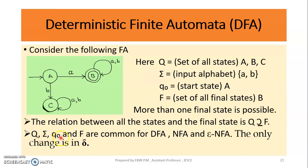So the five tuple is: Q, sigma, Q0, F, and delta. Now, Q, sigma, Q0, and F are common across DFA, NFA, and epsilon NFA. The difference between them lies in delta, the transition function. What is common? Q, sigma, Q0, and F are the same.